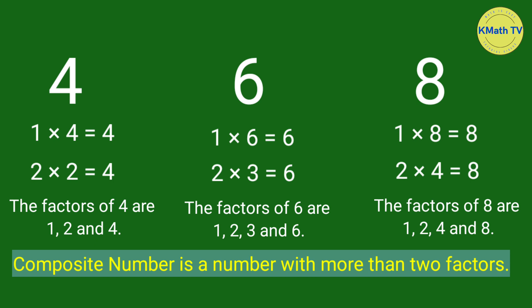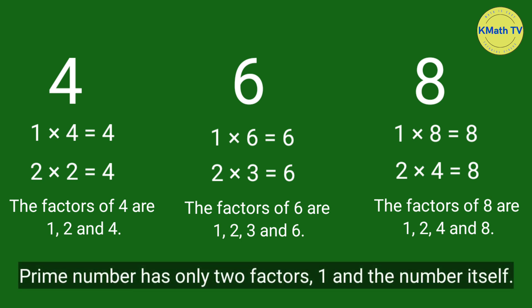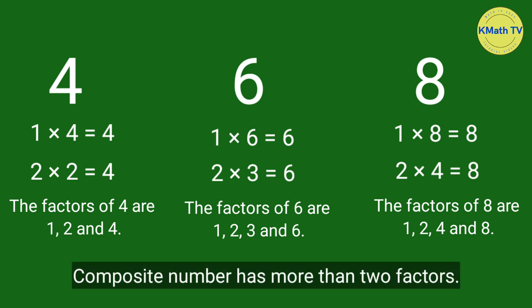Always remember the difference between prime and composite numbers. Prime number has only 2 factors: 1 and the number itself. While composite number has more than 2 factors.